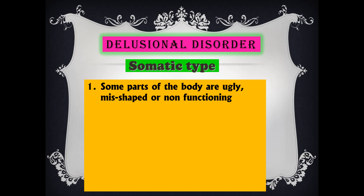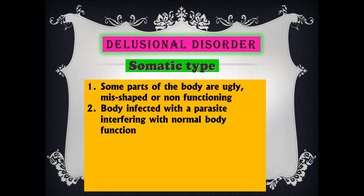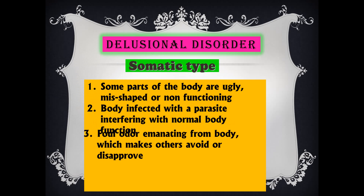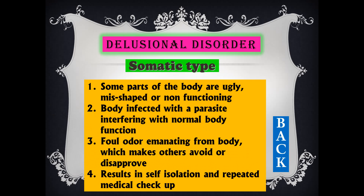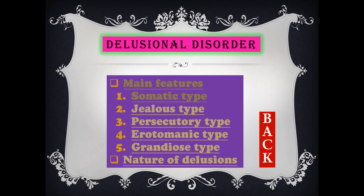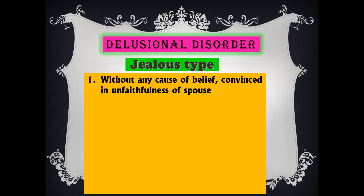The types of delusional disorder: somatic type means the patient believes some part of the body is ugly, misshaped, or non-functioning — for example, 'my finger is smaller than the other.' Body is believed to be infected with a parasite interfering with normal body function. A foul odor is believed to be coming from the body, causing others to disapprove. As a result, the person goes into self-isolation and goes for repeated medical checkups from doctor to doctor.